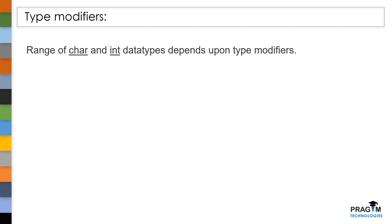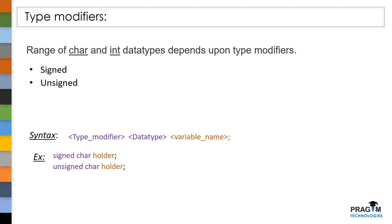In C, the range of char and int data types depends upon the type modifiers — they are signed and unsigned. This is the syntax we need to follow to specify the type modifier when declaring a variable. To use a type modifier in your program, just prefix it to the data type.